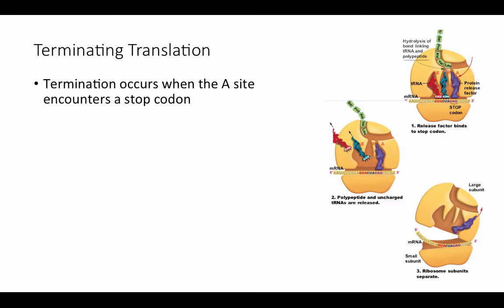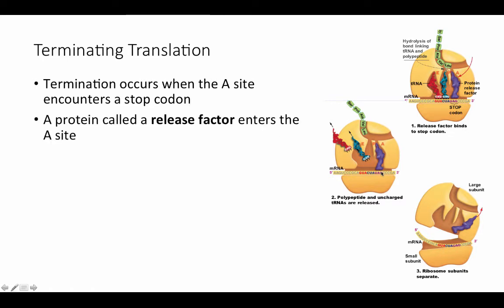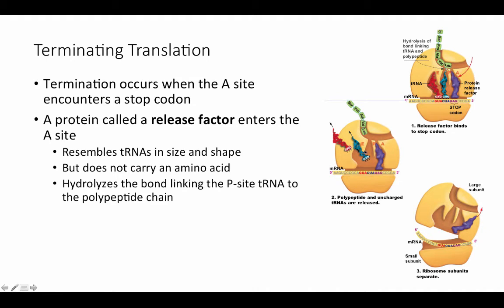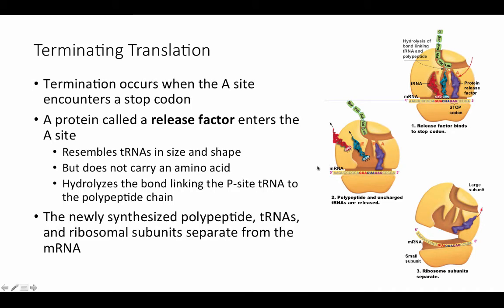Termination occurs when the A site encounters a stop codon. A protein called a release factor enters the A site in response to that stop codon. The release factor resembles tRNAs in size and shape, fitting the specificity of the A site, but it does not carry an amino acid. It hydrolyzes the bond linking the P site tRNA to the polypeptide chain, leaving the polypeptide chain free to float away. The newly synthesized polypeptide, tRNAs, and ribosomal subunits separate from the mRNA, and translation is complete.